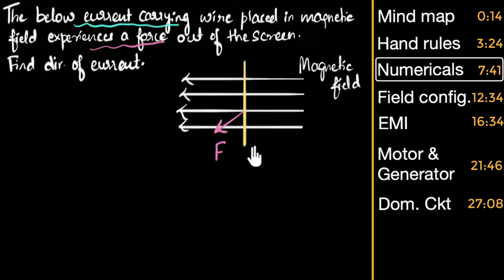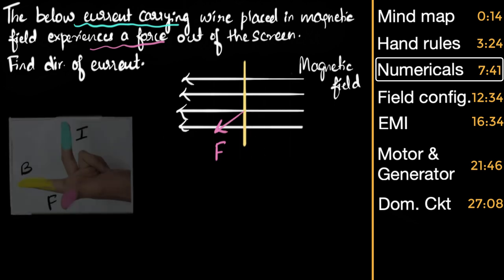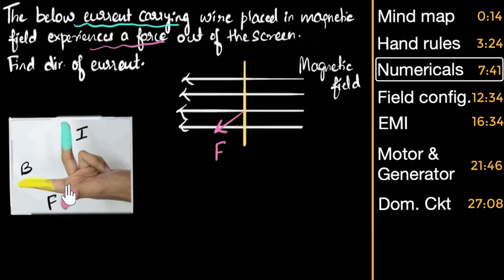Left hand rule is what needs to be used. The left hand needs to be aligned such that the thumb is pointing out of the screen (that's F), and the magnetic field B — the forefinger — is towards the left. So: thumb pointing out, forefinger towards the left, and so the middle finger (current) is pointing upwards. Therefore, the current will be upwards. That's the answer.